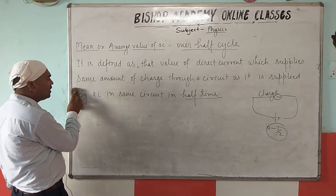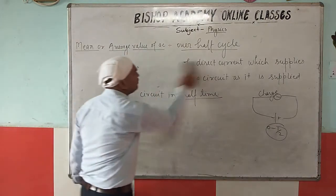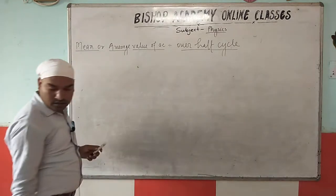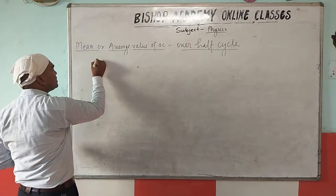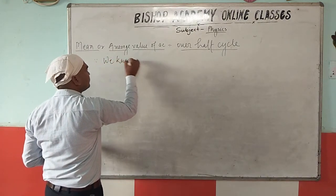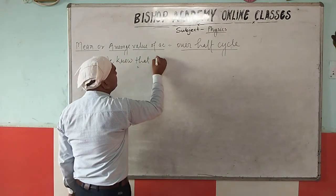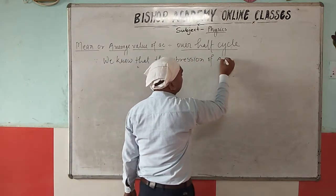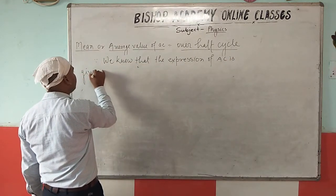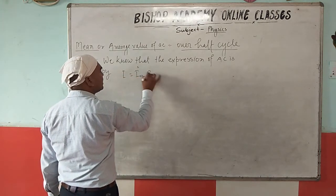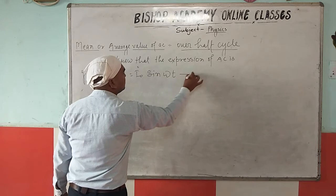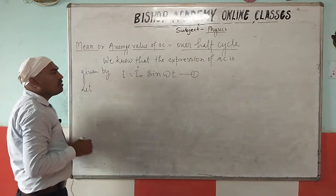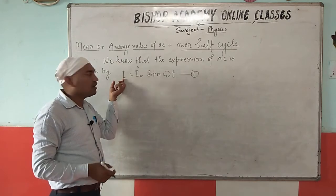Now, based on this definition, we derive the mean or average value. Since we know the expression for AC is given by I = I₀ sin(ωt) — this is equation number one. Now, let us consider a very small time interval dt in which the current can be treated as constant.